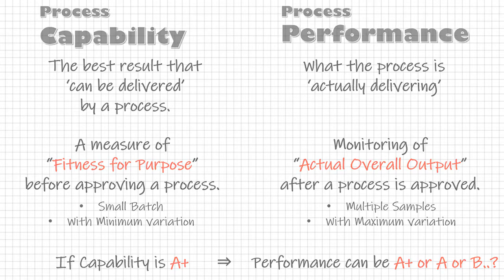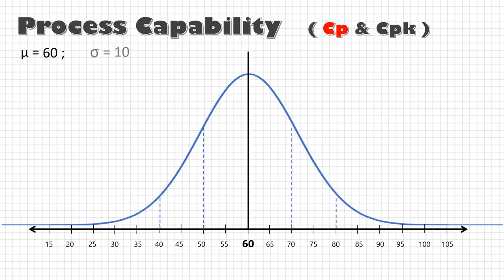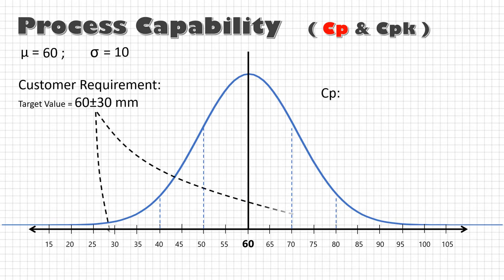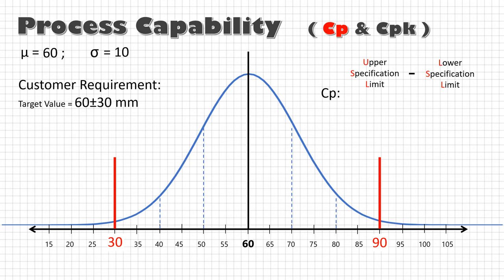In order to calculate process capability, we use two indices, Cp and CpK. Cp compares the standard variation to the maximum allowable tolerance or the customer specific requirement. It is calculated by dividing the difference of USL and LSL with plus and minus three sigma. That is six sigma.